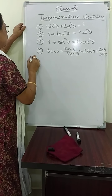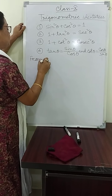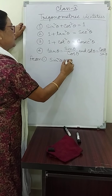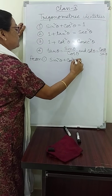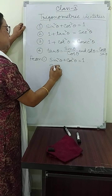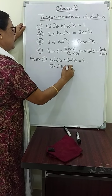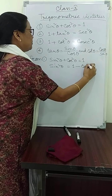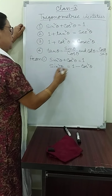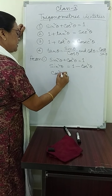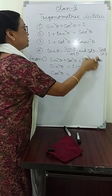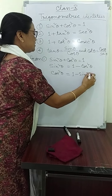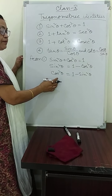So from identity 1, we may write: sin²θ + cos²θ = 1. So sin²θ is equal to 1 minus cos²θ — transpose cos²θ to the right side. And if you write cos²θ here, then transpose sin²θ to the right side: cos²θ = 1 minus sin²θ. These are some relations we may apply.